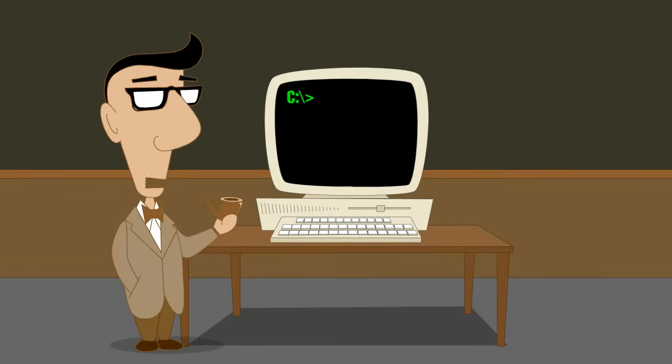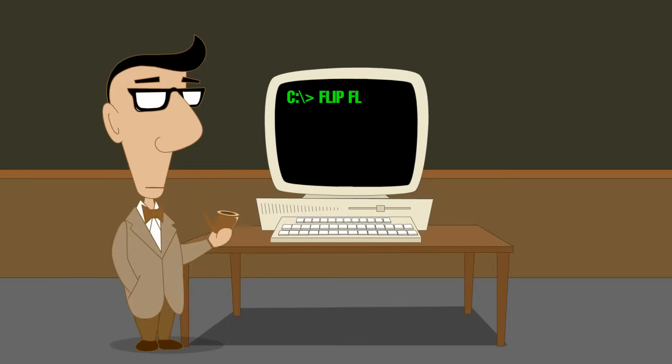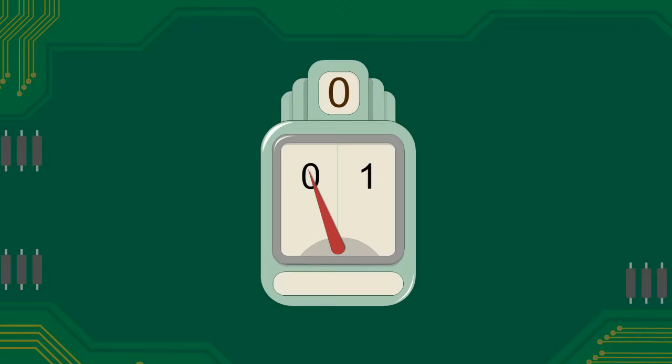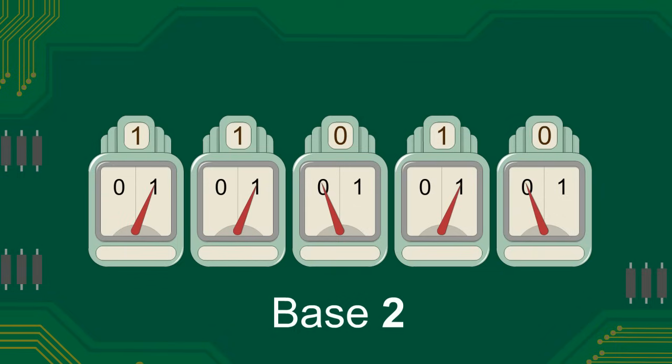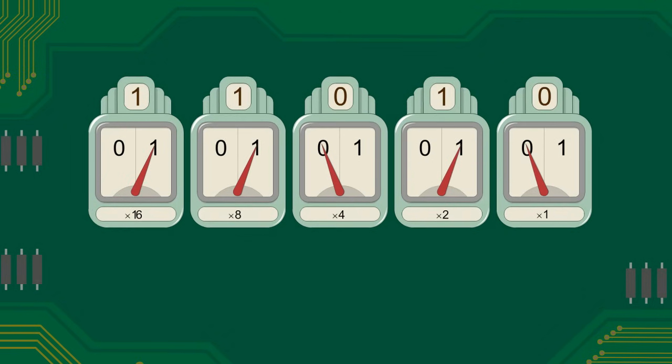Digital computers use electronic circuits called flip-flops to represent numbers. Each flip-flop can store a single bit which can represent either a zero or a one. In the binary number system, zero and one are the only two numeric symbols. Since binary is base two, each column multiplier is two times the multiplier of the previous digit.